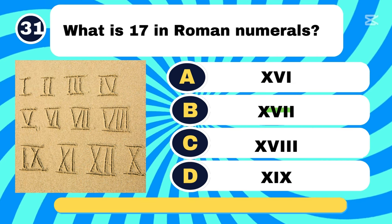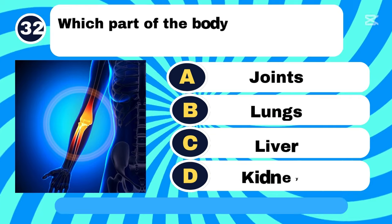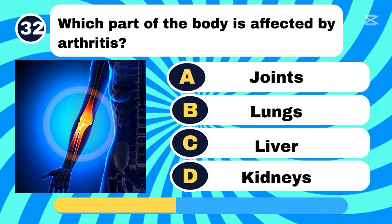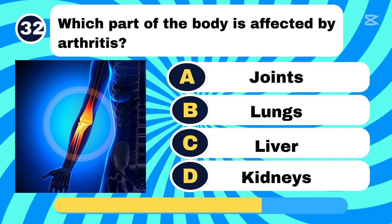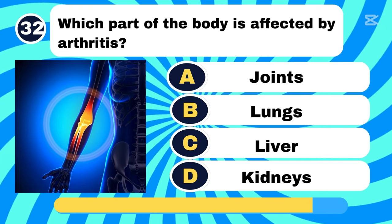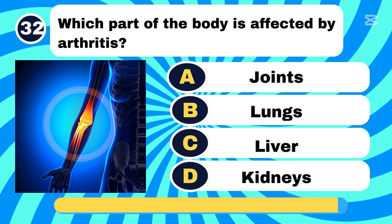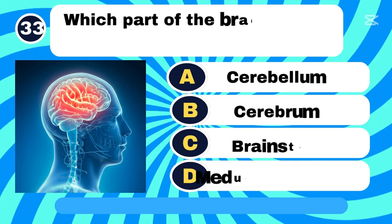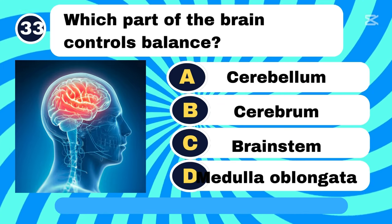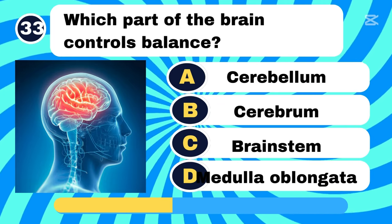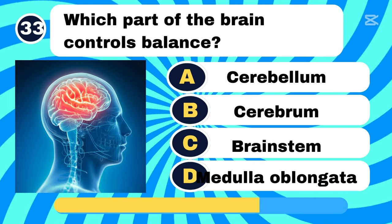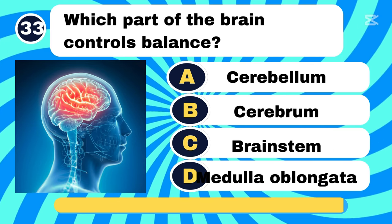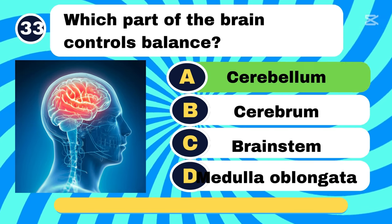Letter B. Which part of the body is affected by arthritis? Letter A, Joint. Which part of the brain controls balance? Letter A, Cerebellum.